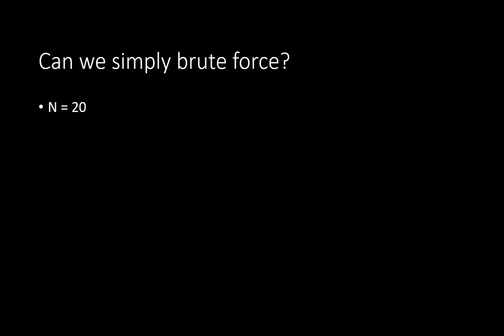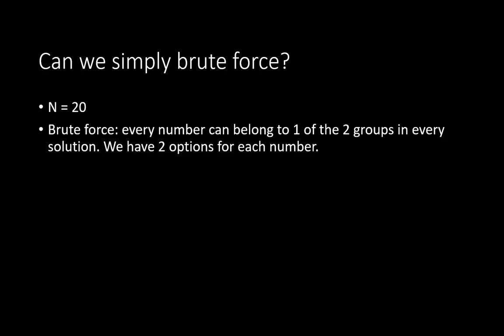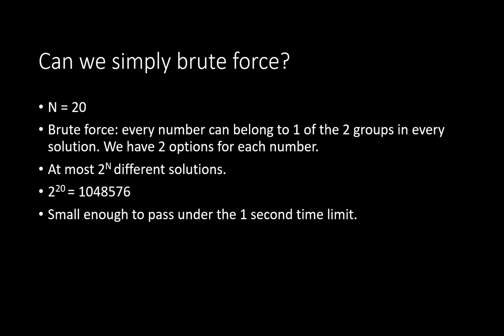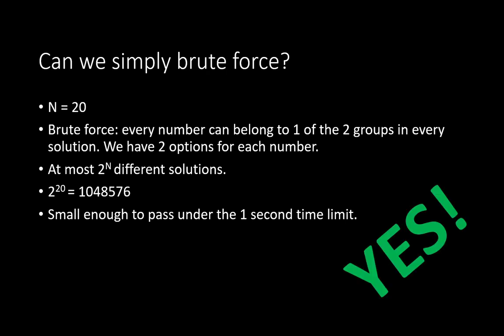So the question remains: can we simply use brute force here? The worst case for n is 20. The brute force strategy is to try both options for each apple — put it in the left group or the right group. That gives us 2 to the power of n different solutions, since every time we have two options. 2 to the power of 20, the worst case, is around 1 million, which is actually small enough to pass under the one-second time limit. So yes, we can just simply use brute force here.